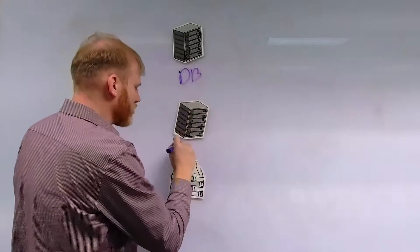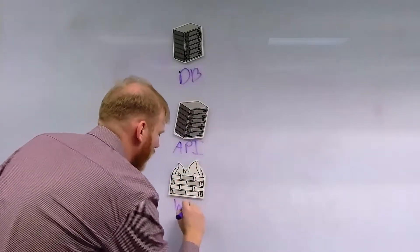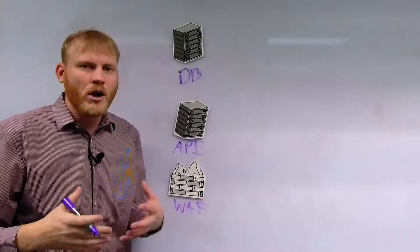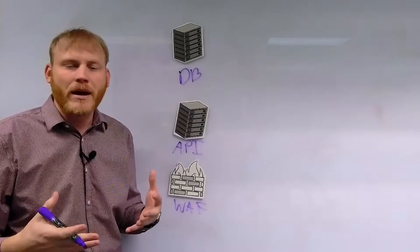So you probably have things like database servers, or maybe you have an API that sits in front of that, or a web application firewall that tries to protect that information. All of these generate security events and different transactional information.